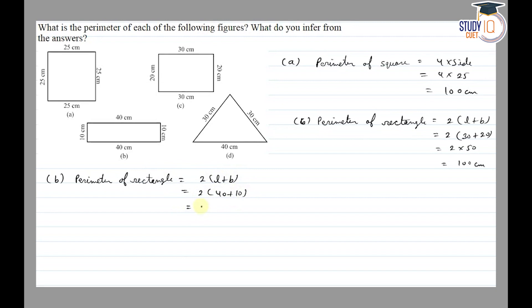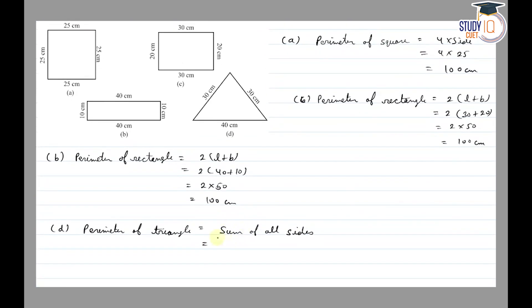2 into 50 equals 100 cm. Then part (d): this shape is a triangle. Perimeter of triangle is equal to sum of all sides. All sides given are 30 plus 30 plus 40, which is 60 plus 40, equals 100 cm.